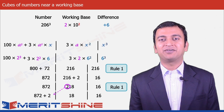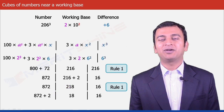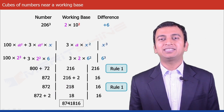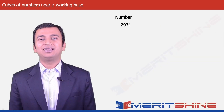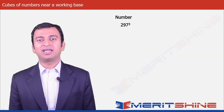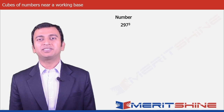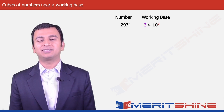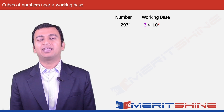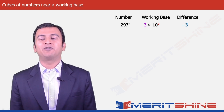Now we can get our final answer by clubbing all these, which would be 8,741,816. Let us try to find the cube of 297. Here our working base would be 3 × 100. The multiplier 3 would be our a and the difference minus 3 would be our x.